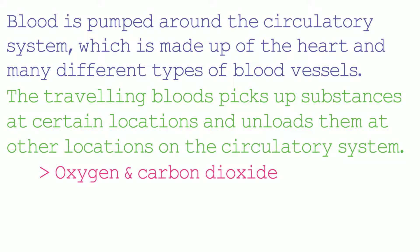Oxygen goes into the bloodstream at the lungs and is taken to other parts of the body where it is needed for the respiration reaction. The respiration reaction produces carbon dioxide. Carbon dioxide enters the bloodstream of cells where the respiration reaction takes place, then travels to the lungs where it is breathed out.